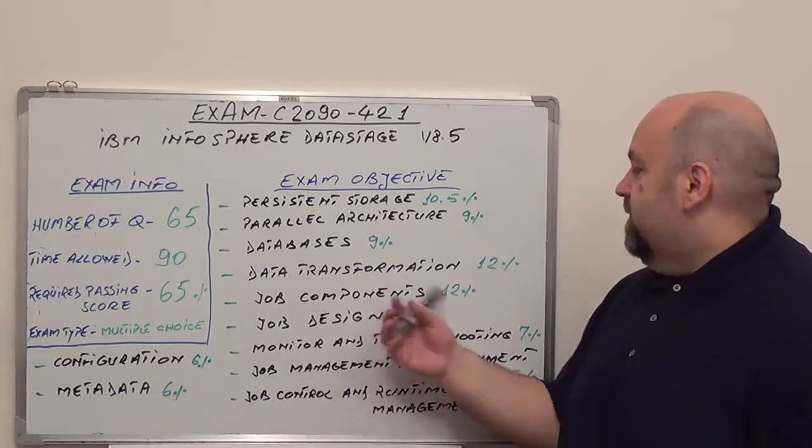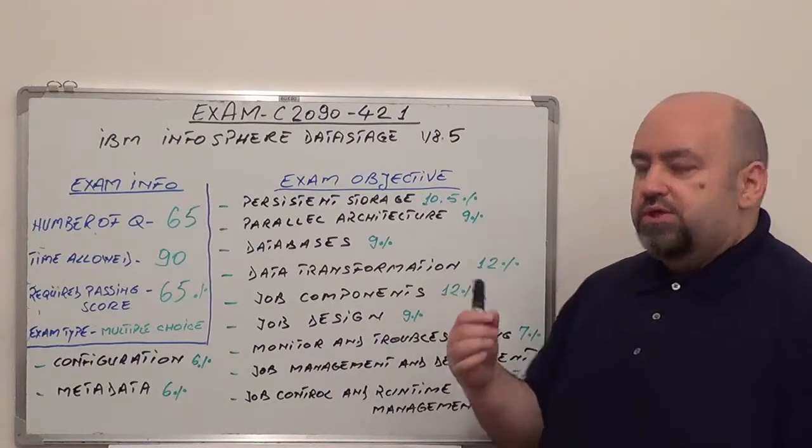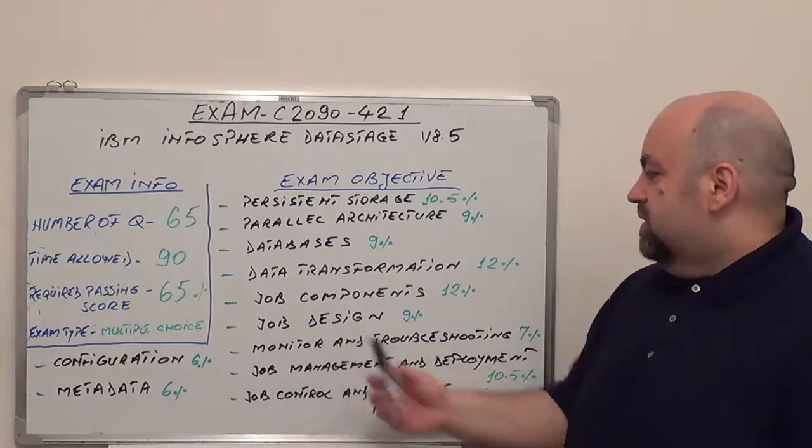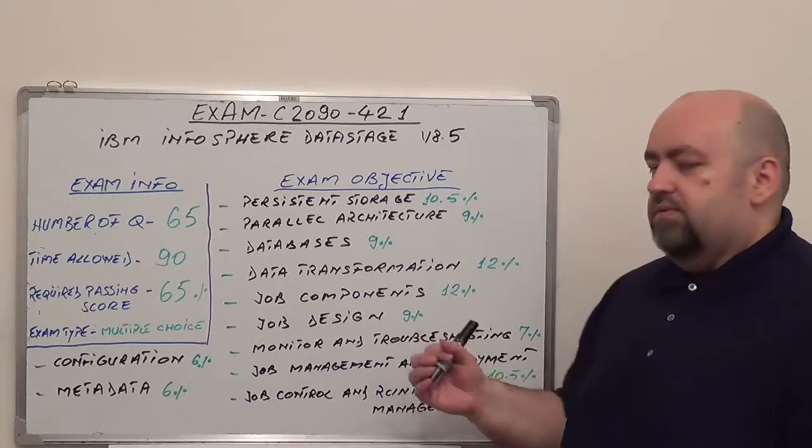After that, we're going to have data transformation, 12% from total operation. Next, job components, 12% from total operation.